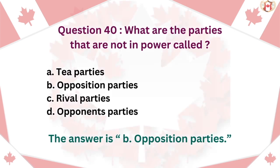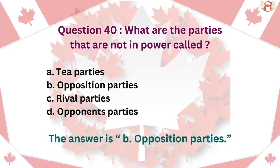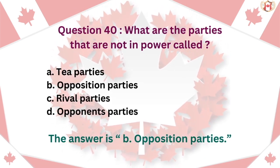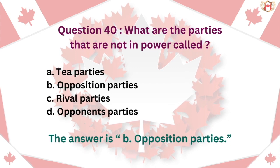Question 40: What are the parties that are not in power called? A. T. Parties, B. Opposition parties, C. Rival parties, D. Opponents parties. The answer is B. Opposition parties.